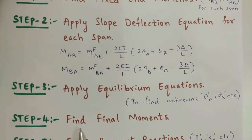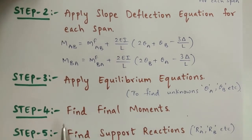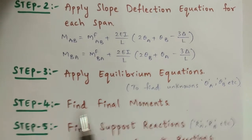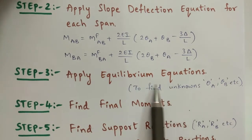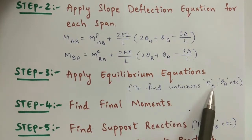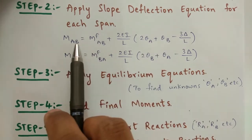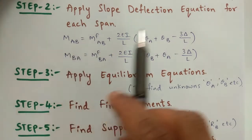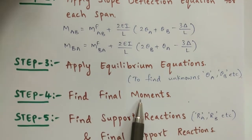In step number 4, you have to find the final moments. After applying the equilibrium equations, you will get the unknown values theta_A and theta_B. These theta_A and theta_B values you have to substitute again in this formula, and you will get the final moments.